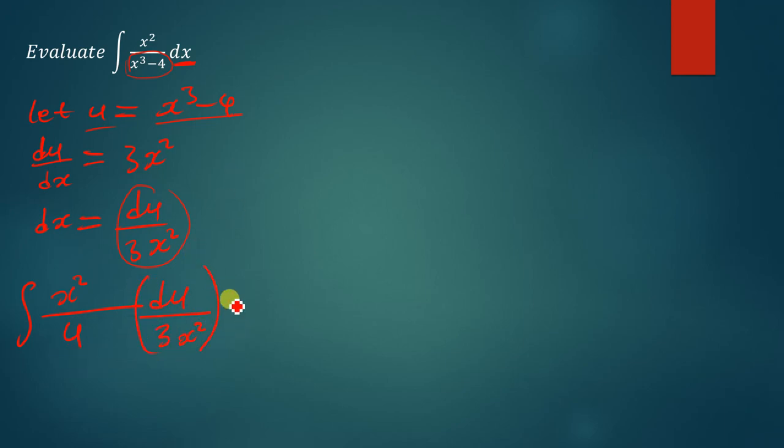Then from there, we can multiply these expressions. When we do the multiplication, we can see that this and that will cancel. And I'm going to remain with u over 3 du, which can also be written as 1 over 3 the integral of u du.